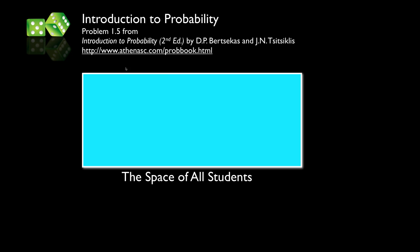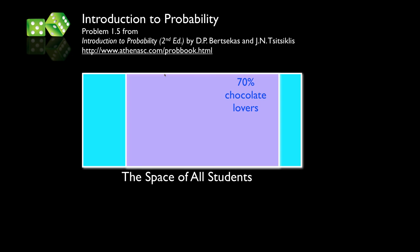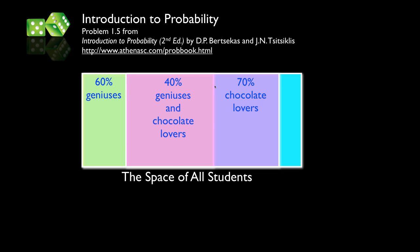Let's look at this problem graphically. This box represents the space of all students in the class. The 60% geniuses are represented by shading 60% of that space in light green. The 70% chocolate lovers are shaded in purple. I've chosen the overlap deliberately so that when the two sets are combined, the overlapping region represents the 40% of the class that are both geniuses and chocolate lovers.